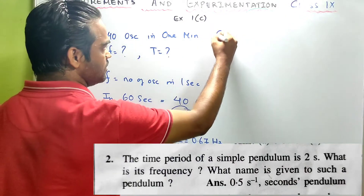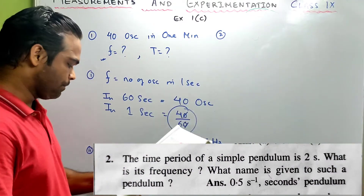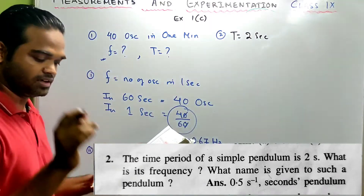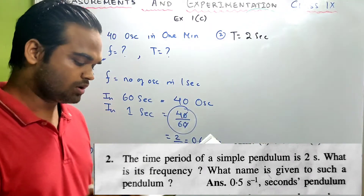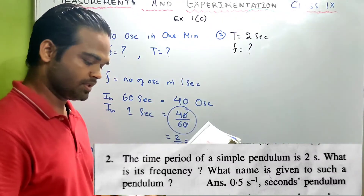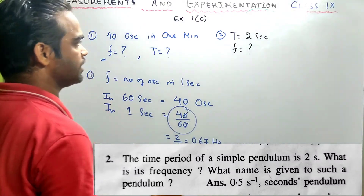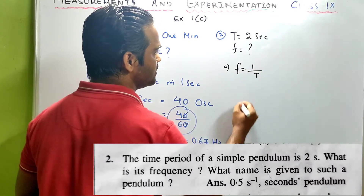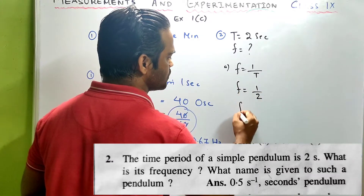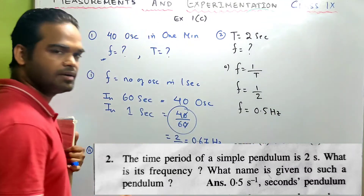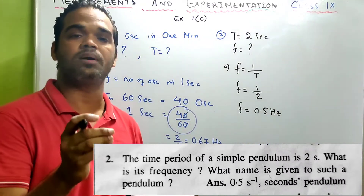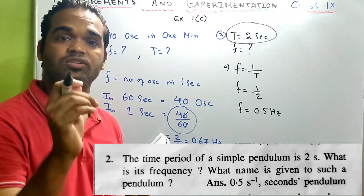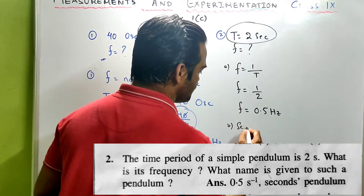Now look at the second sum. They have given the time period of a simple pendulum is 2 seconds. What is its frequency? Using F = 1/T, F = 1/2 = 0.5 hertz. And they asked what name is given to such a pendulum — since the time period is 2 seconds, it is known as a seconds pendulum.